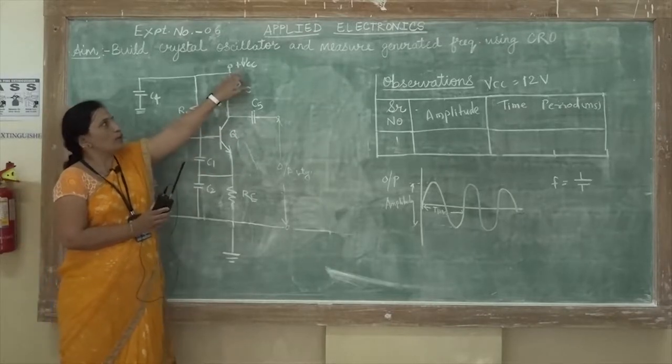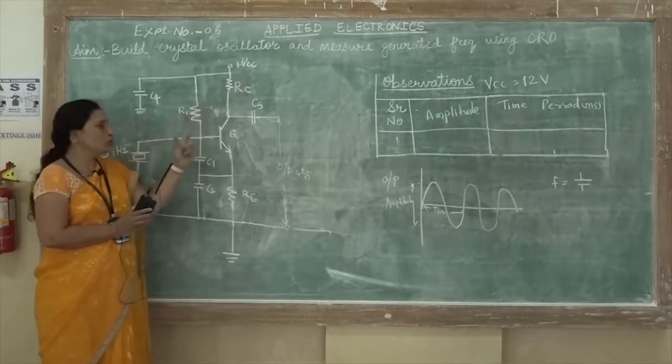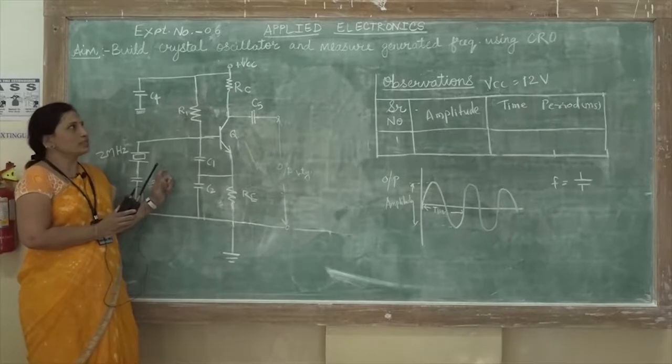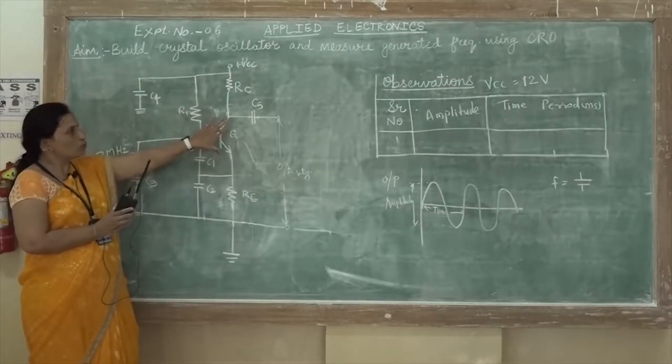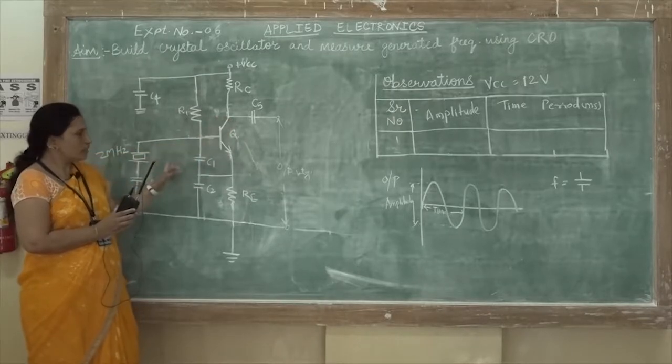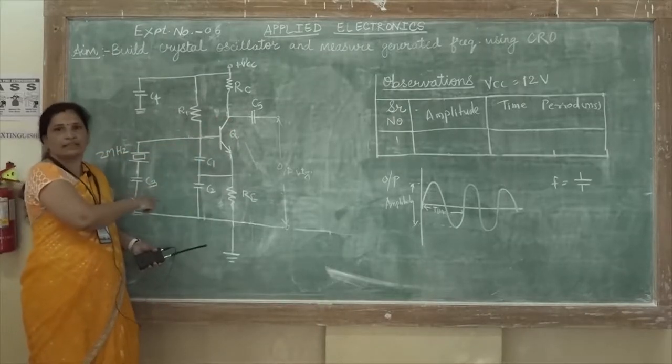In this circuit just you have to provide the DC voltage, there is no need to provide the AC voltage. The oscillator circuit diagram basically consists of two sections: one is the amplifier section and one is the feedback network.